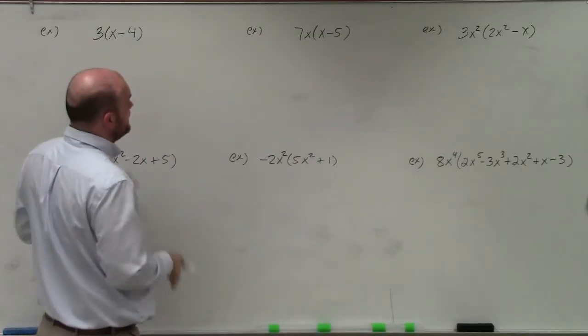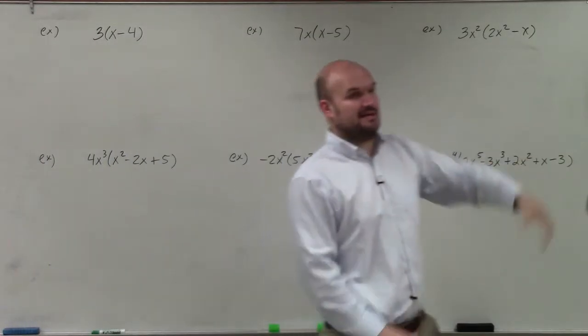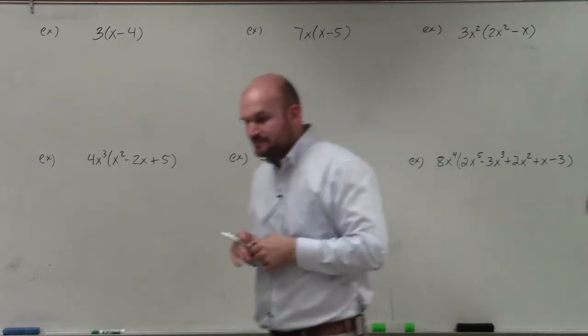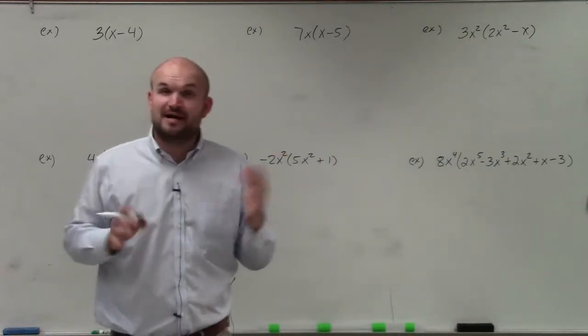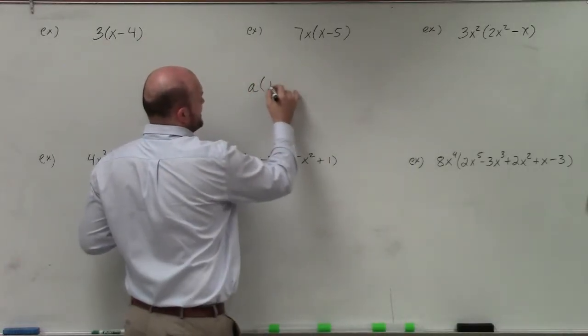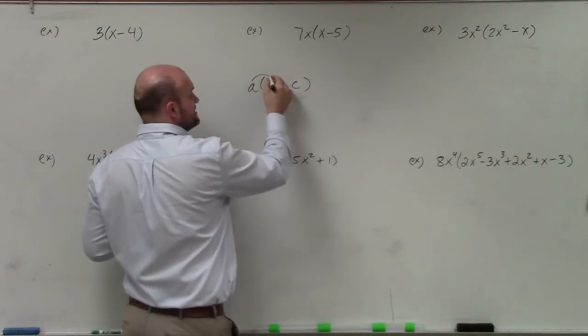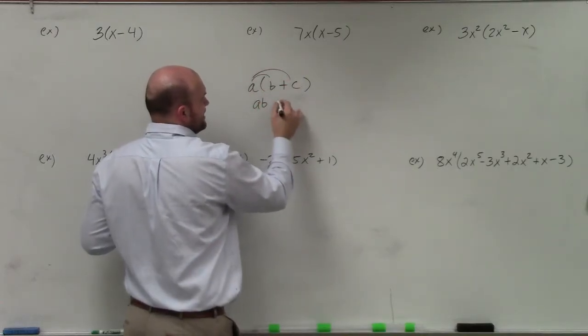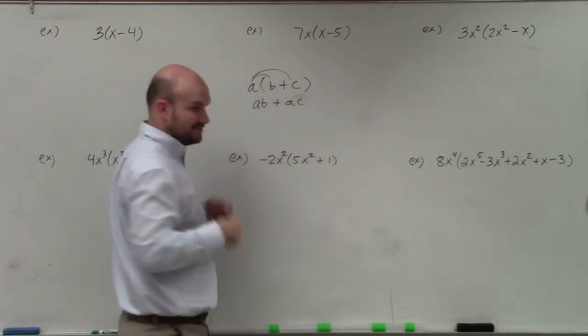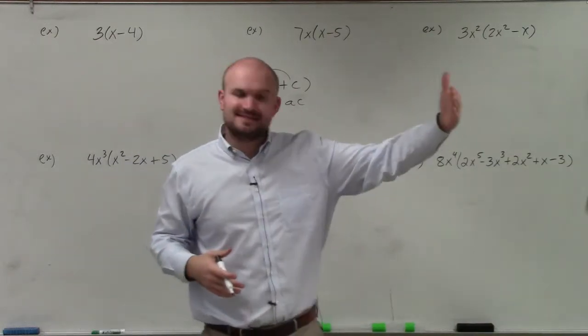Basically what we have here is a monomial outside of a polynomial in parentheses. The idea when multiplying monomials times binomials is applying the distributive property. Going back to basic algebraic properties, if a is multiplied times b plus c, then you need to multiply a times b plus a times c. So we've got to make sure we multiply our term outside the parentheses to every single term inside the parentheses.